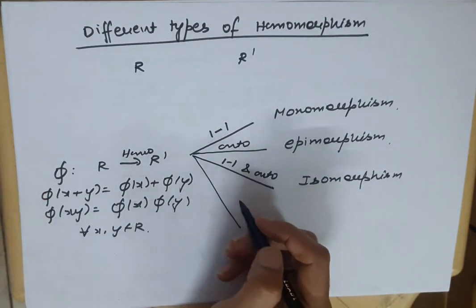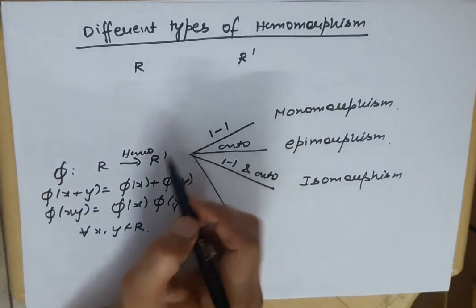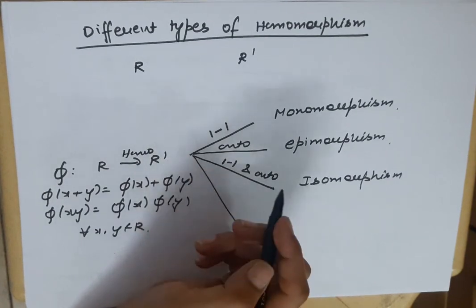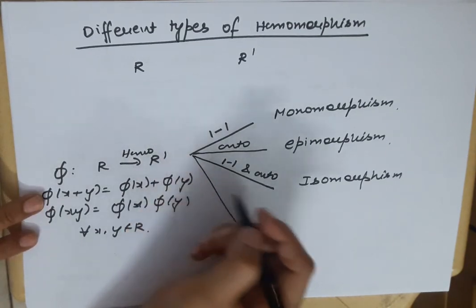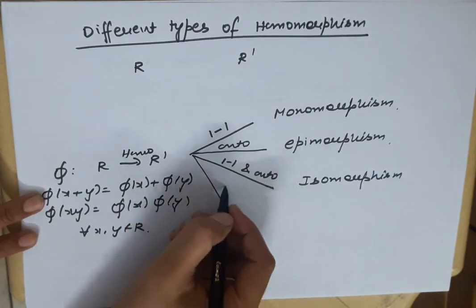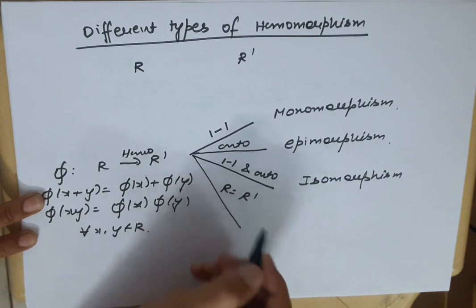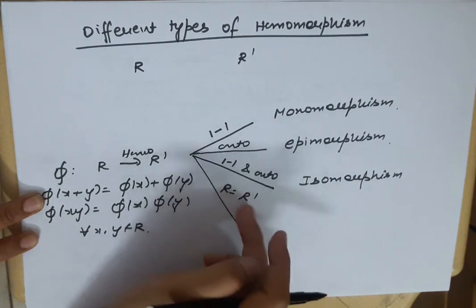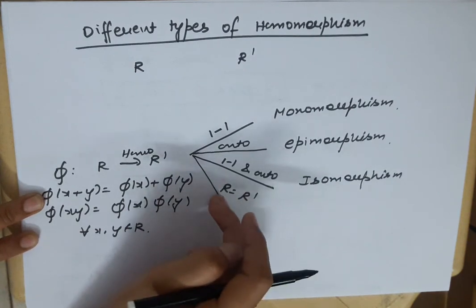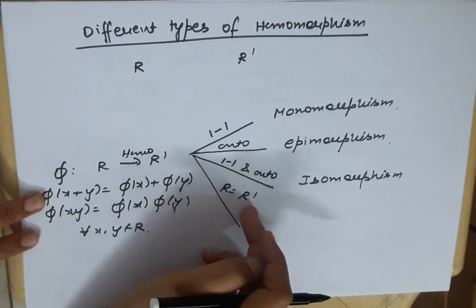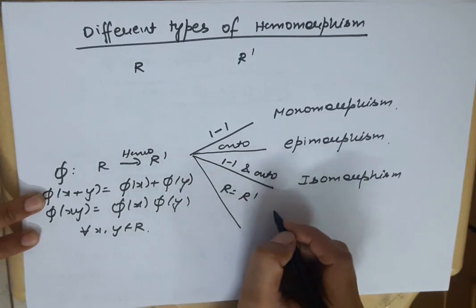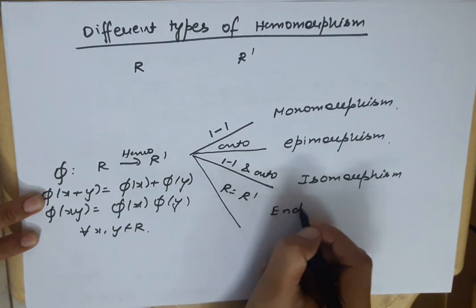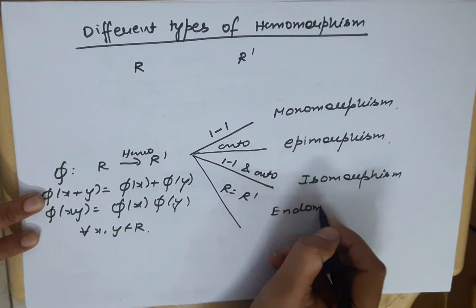The next condition is: if we have a mapping which is a homomorphism, and along with that R is equal to R', meaning the domain and co-domain are the same, then in this case we call it endomorphism.